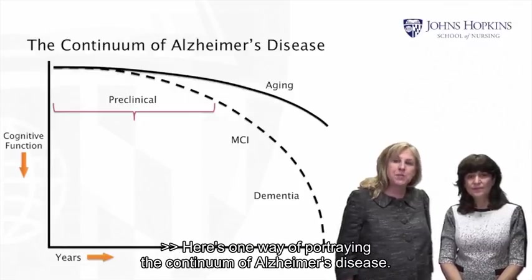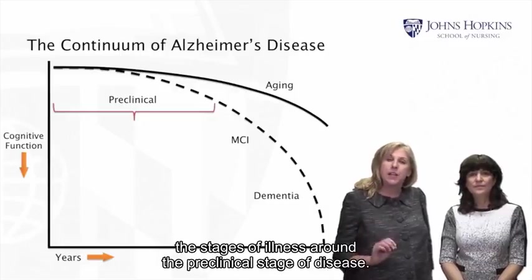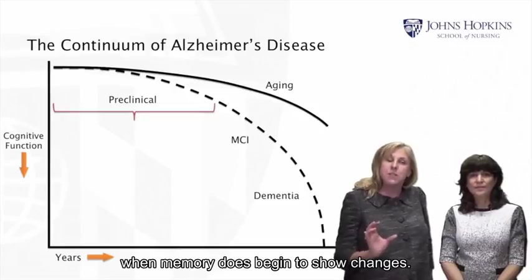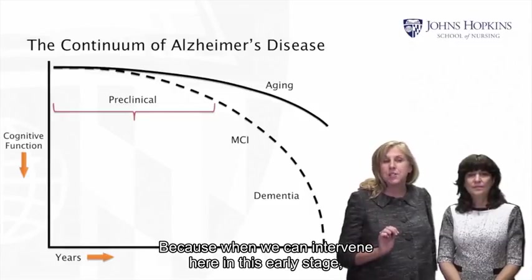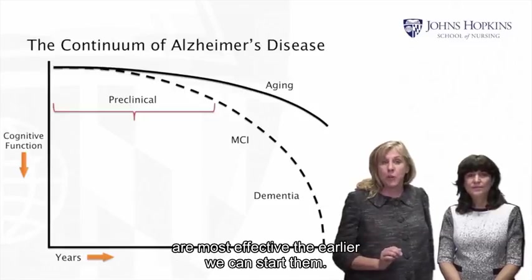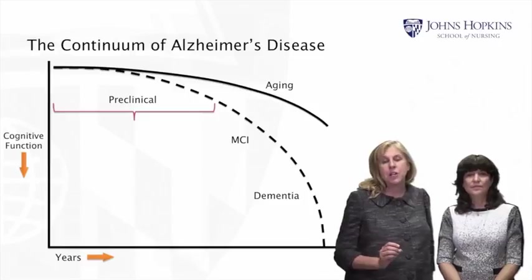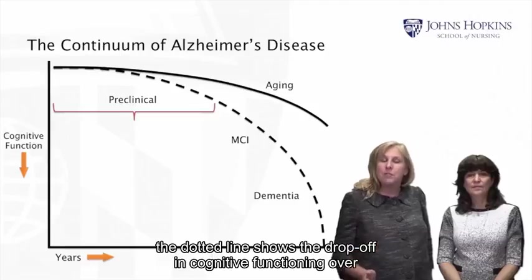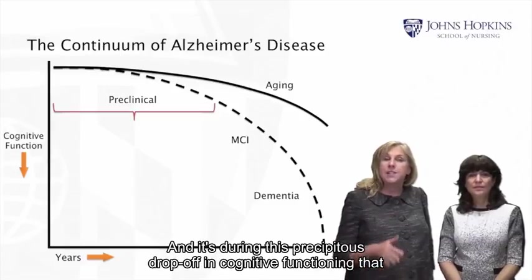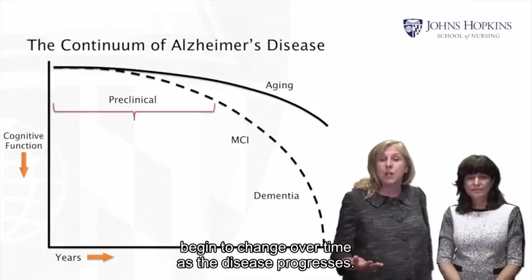Here's one way of portraying the continuum of Alzheimer's disease. A lot of attention has been focused on identifying the preclinical stage when memory begins to show changes, because when we can intervene here we can perhaps slow the course of illness, and most pharmacologic treatments are most effective the earlier they are started. Today's discussion picks up around the early stage, when the disease has been diagnosed. The dotted line shows the drop off in cognitive functioning over time compared to normal aging, and it's during this precipitous drop off that unmet needs begin to emerge and change as the disease progresses.